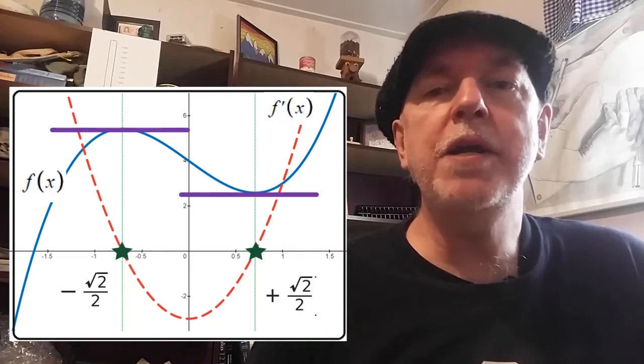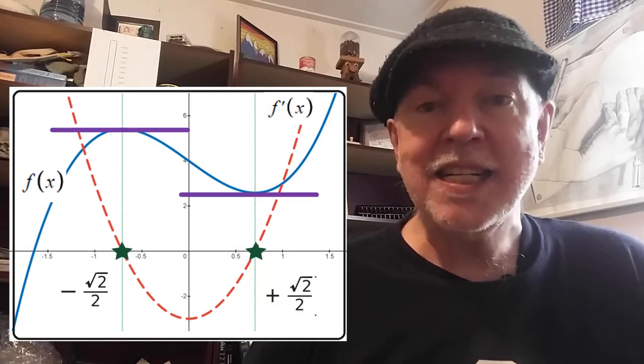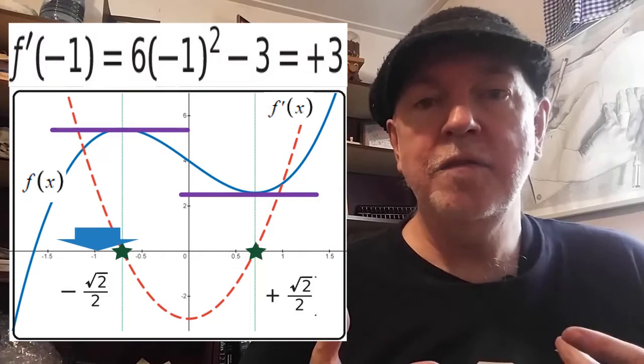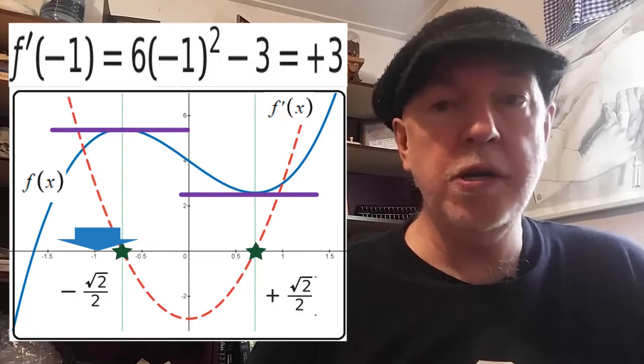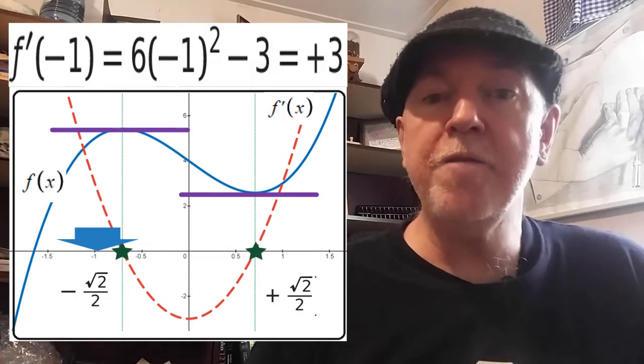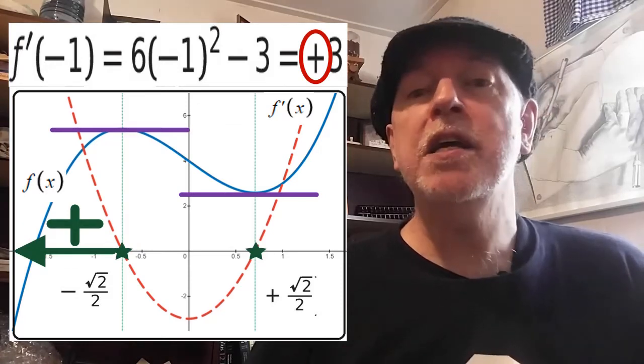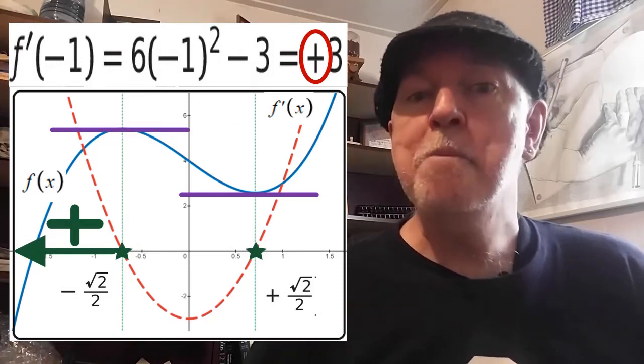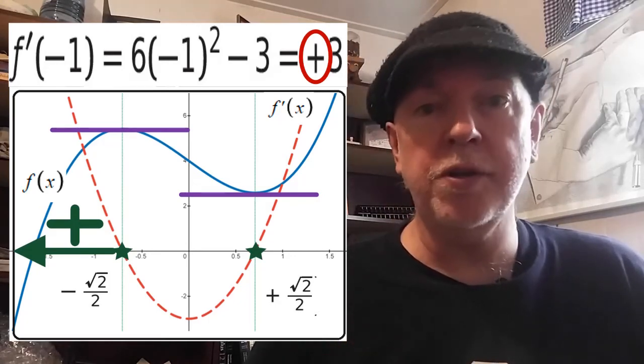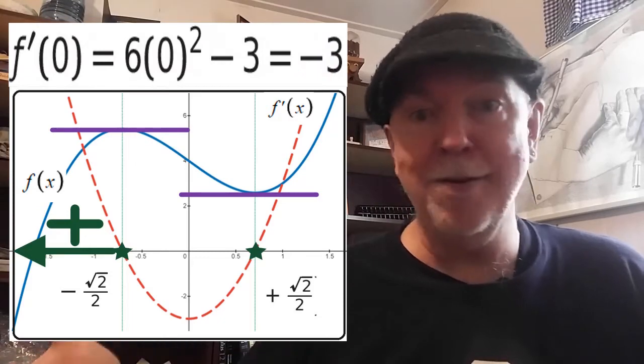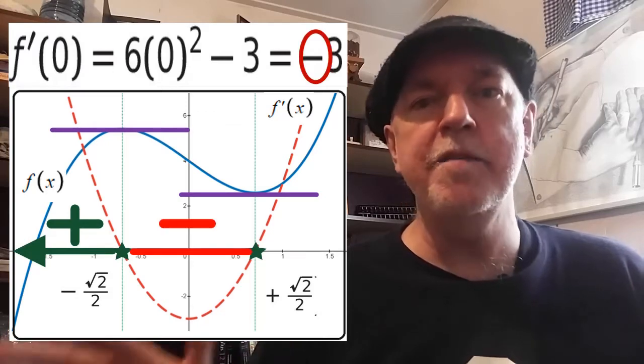We'll compute the value of the first derivative at some convenient negative value for x to the left of negative root 2 over 2 and we find that it is positive. Next, we compute the value between the negative root 2 over 2 and positive root 2 over 2. Let's choose zero because that's nice and easy to work with, and we get a negative value.